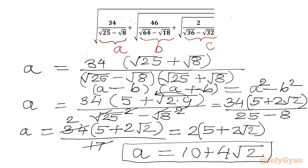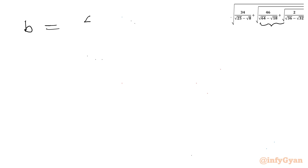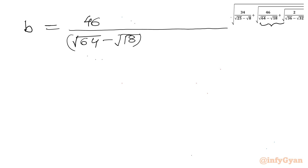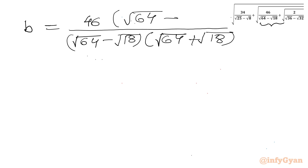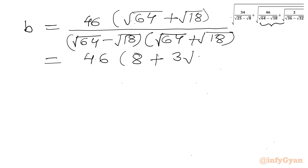Let us simplify B. So B is 46 over (√64 minus √18). We multiply numerator and denominator by (√64 plus √18). So we get 46 times (8 plus √18) over (√64)² minus (√18)². We can write √18 as √(9×2) which equals 3√2.